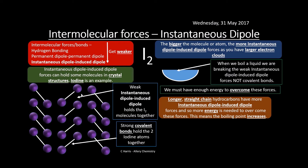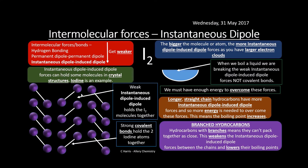Larger straight-chain hydrocarbons have more instantaneous dipole-induced dipole forces, so more energy is needed to overcome them, giving higher boiling points. Going from ethane — a gas at room temperature — to decane with 10 carbons, there are more electrons and more forces, so the boiling point increases. Branching also has an effect: branched hydrocarbons can't stack closely together, reducing surface contact, which weakens the forces and lowers the boiling point compared to straight-chain molecules of similar molecular mass.